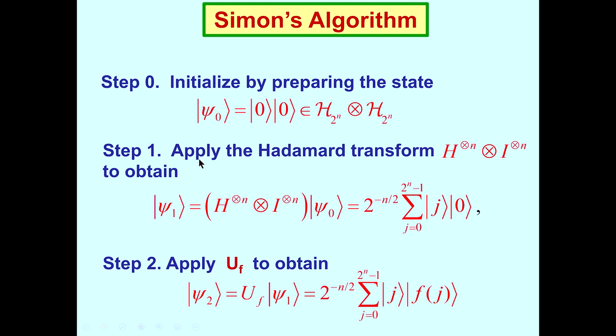Step 1, we apply the n-fold Hadamard transform. We apply the Hadamard transform to each qubit in the left register. We leave the right register alone. In this way, we have created a superposition in the first register of all binary strings from 0 up to 2 to the n minus 1.